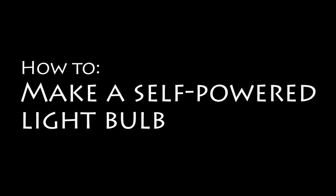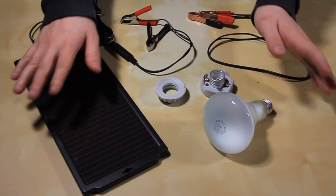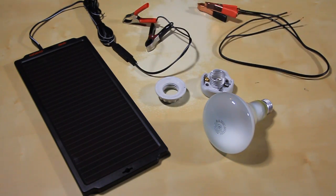Today we're going to make a self-powered light bulb. We'll need a small light fixture, wired alligator clips, and a solar panel.